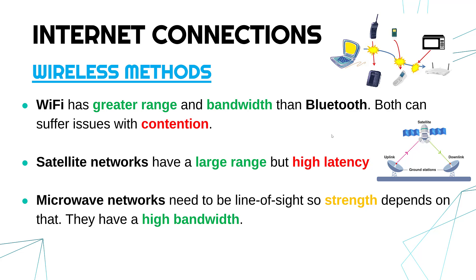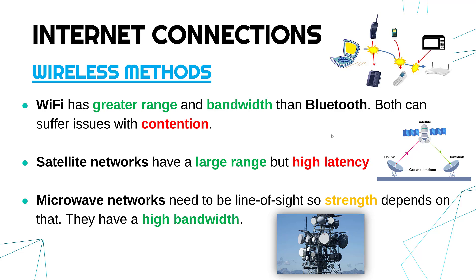Another method which is not used as often but does exist is microwave networks. These use the same technology as your kitchen microwave but are used for communication. These need to be line of sight — meaning to access a microwave network you've got to be directly in front of it with a clear path between you and the receiver. The strength really depends on where you are. If you are out of sight or blocked by a mountain it won't have good strength, but if you're right in front of it in a direct path it would have good strength. A pro is they have high bandwidth despite this fixed range limitation.